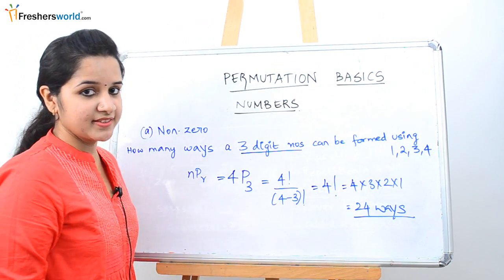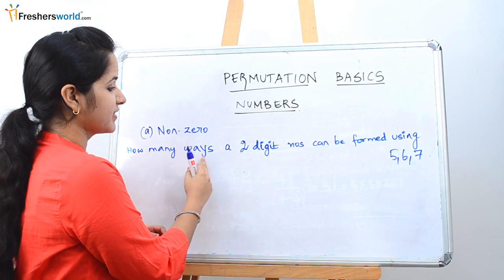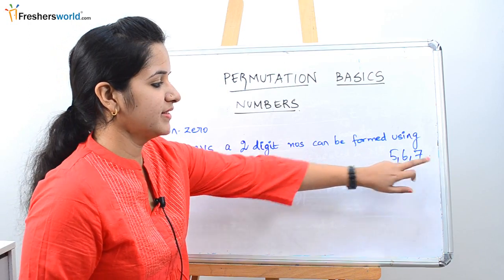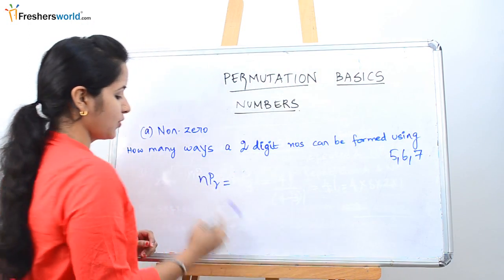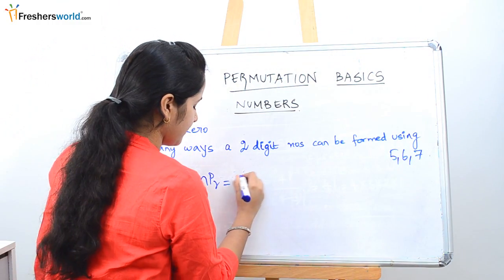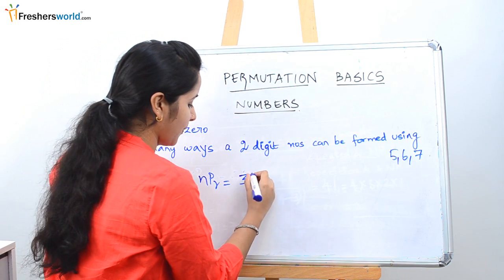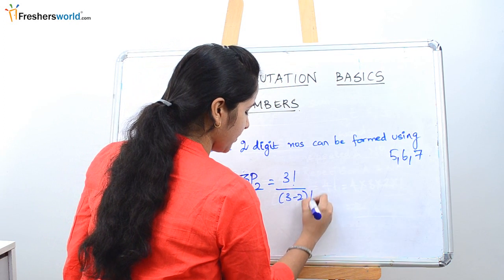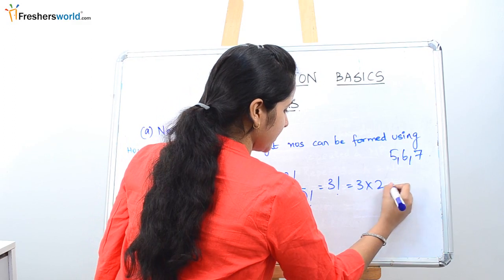A similar example: how many ways can a two-digit number be formed using 5, 6, and 7? The formula is NPR. Three digits are given, and we need to form two-digit numbers, so it is 3P2. That gives 3 factorial divided by (3−2) factorial, which equals 3 factorial = 3 × 2 = 6.